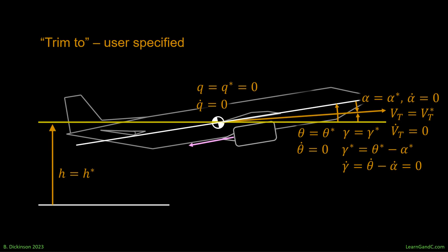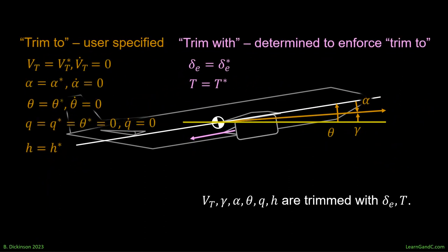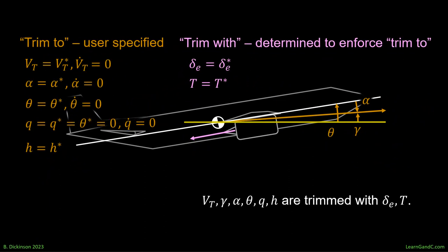To trim to these conditions, we will trim with certain variables. Here, it's the elevator and the throttle. In short, the state variables are trimmed to desired values and trimmed with elevator and throttle. Note, it's not necessarily the case that trim with variables are only control inputs. Other trim definitions will trim with both control inputs and state variables. So, the question is, how do we determine the values of the elevator and the throttle that corresponds to the desired trim state?